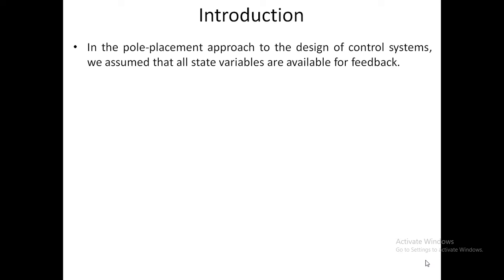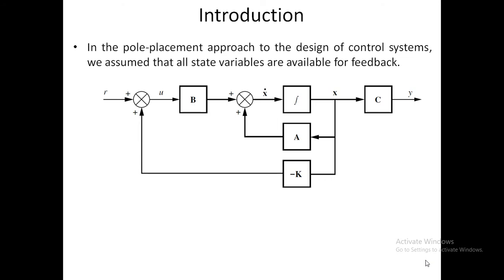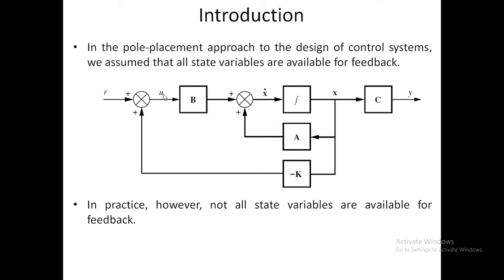In the pole placement approach to the design of control systems, we assume that all state variables are available for feedback. Considering the block diagram representation of a system, the A matrix, B matrix, and C matrix are given. Here x-dot equals Ax plus Bu, and y equals Cx. We consider a feedback approach with minus K fed to the reference input r, and using this feedback plus reference input we get the input u.